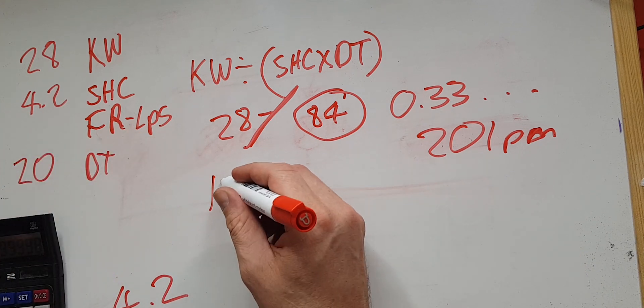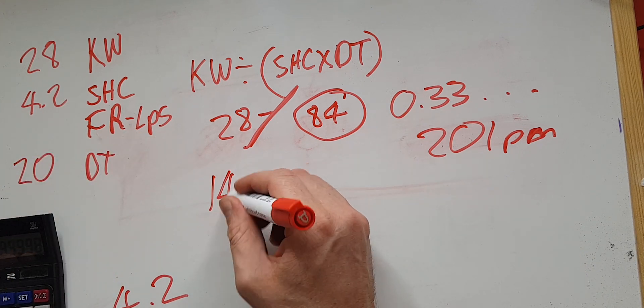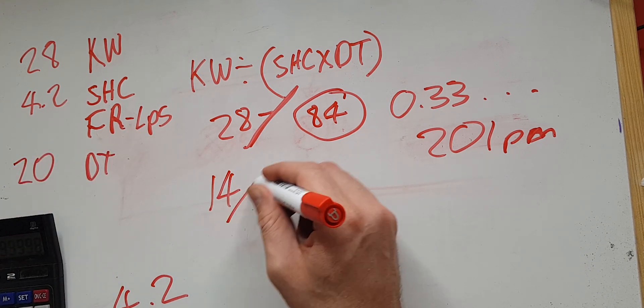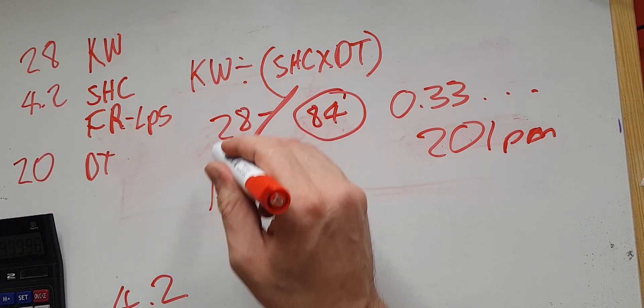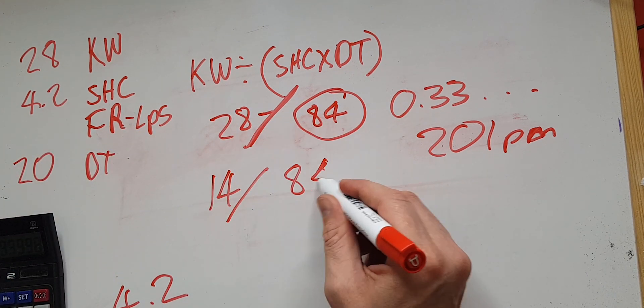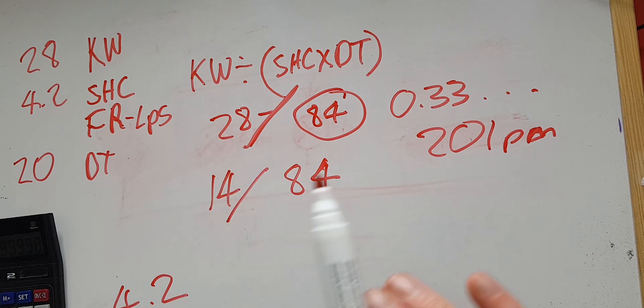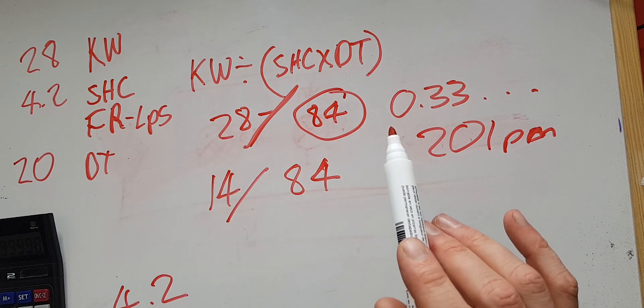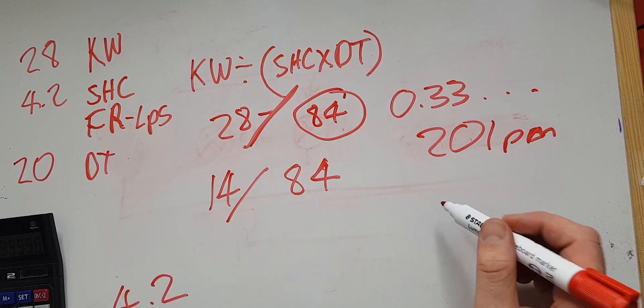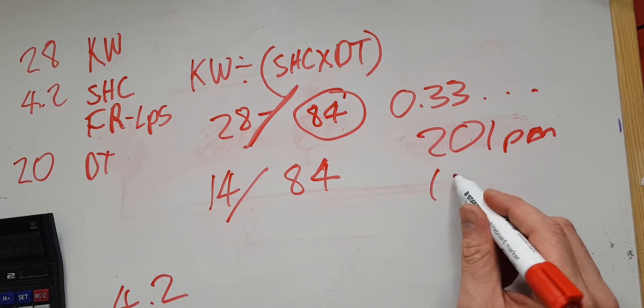Just to show you how the relationship works: if we do 14 kilowatts — which is half the amount of kilowatts — divided by 84, you can probably guess what the answer is. If you've got half the amount of kilowatts and you want to maintain delta T 20, the answer is 10 liters a minute.